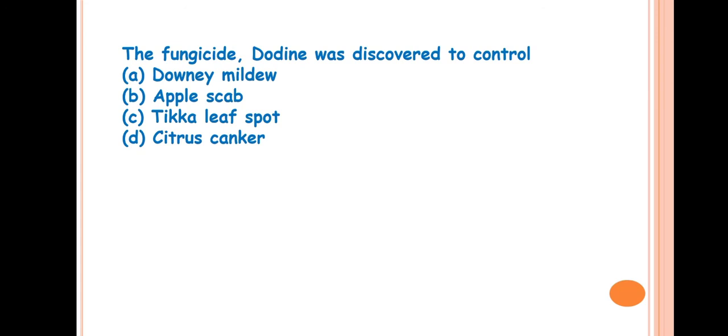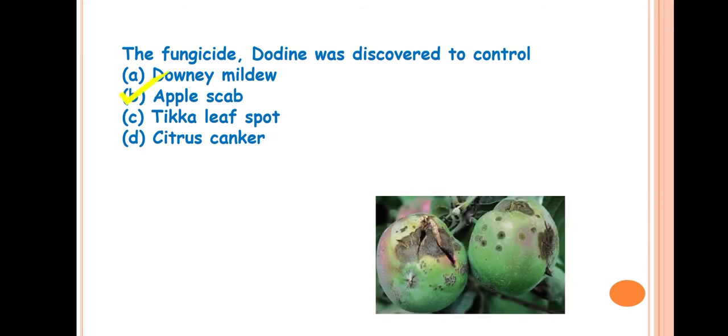Next, question number 4. The fungicide Dodine was discovered to control? Answer is Apple Scab. This is the symptom of Apple Scab. You can see here. This Dodine fungicide was discovered in New York for management of Apple Scab that is caused by Venturia inaequalis. This is a fungal disease.